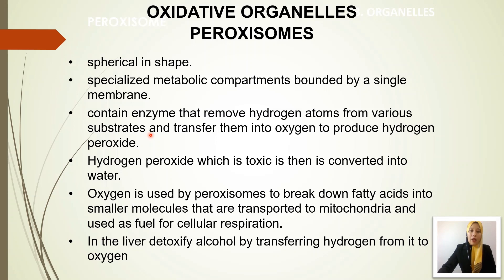A special characteristic of the peroxisome is that they have a lot of enzymes inside. One of them is catalase. We know that catalase works to break down substrates — this enzyme has the ability to remove hydrogen atoms from various substrates, especially harmful substances, and transfer them to oxygen, producing hydrogen peroxide, H₂O₂. As we know, H₂O₂ is toxic and harmful to the cell.